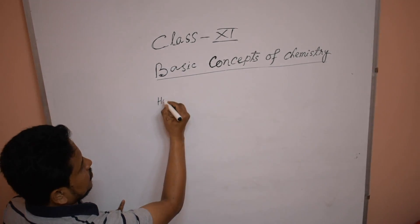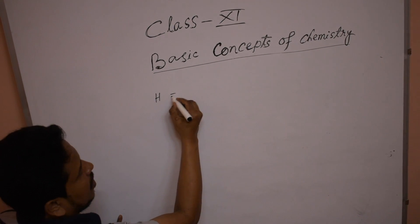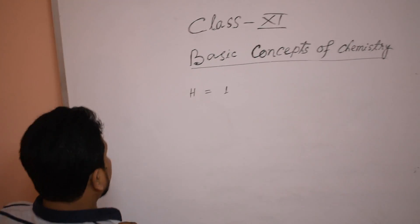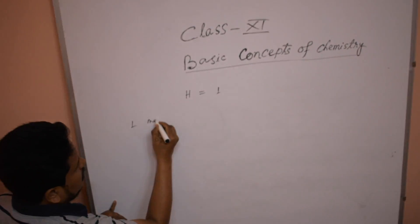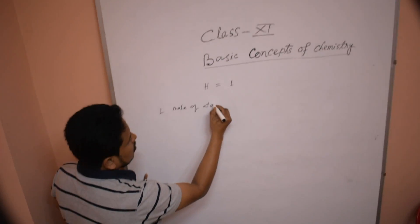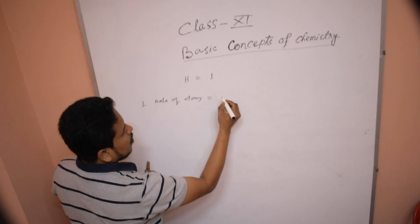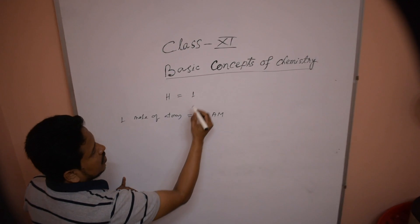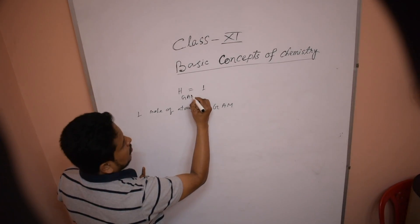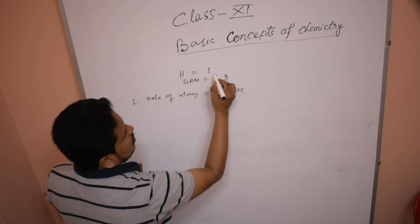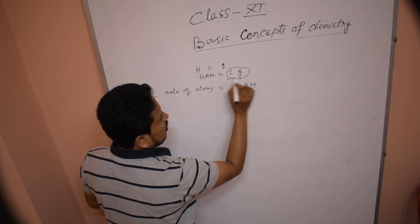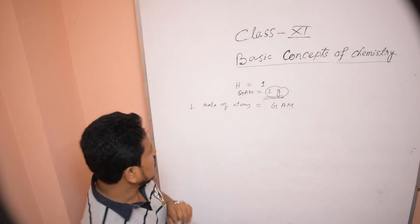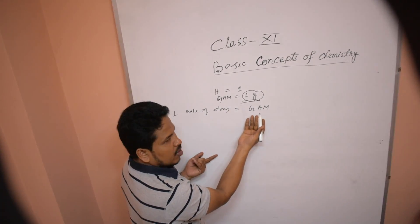Let us look at the hydrogen atom. You know the hydrogen atom — atomic mass of hydrogen is 1. One mole of atoms is known as gram atomic mass. The atomic mass of hydrogen is 1, so the gram atomic mass of hydrogen is 1 gram. When atomic mass is expressed in gram units, that is called gram atomic mass, and that amount is called 1 mole of atoms.